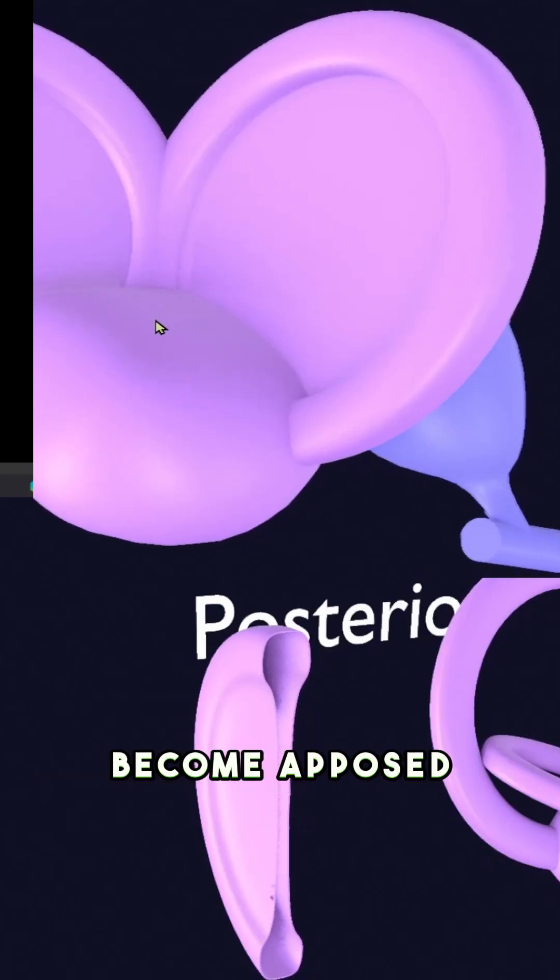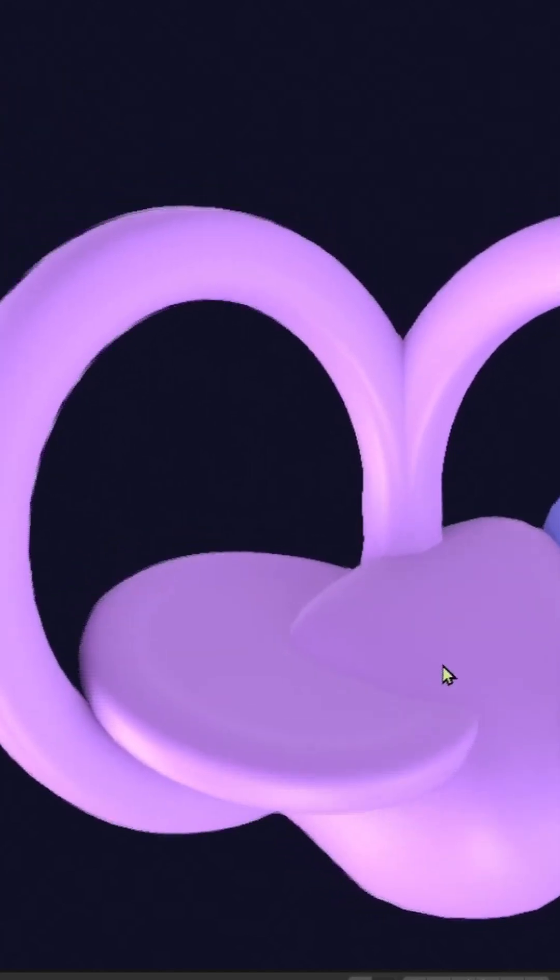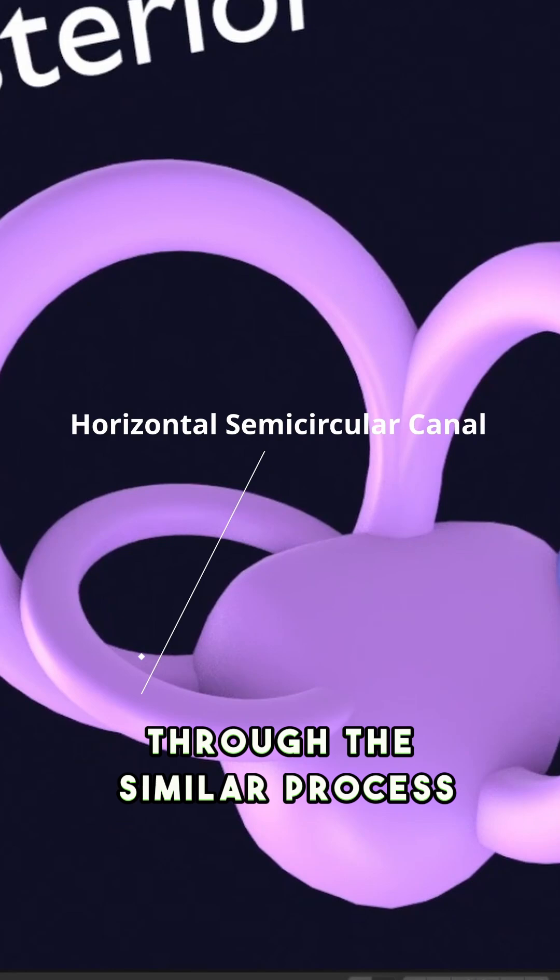From the dorsal swelling, two flat discs arise. Their central portions become opposed and are ultimately destroyed to form two semicircular canals. Later, the horizontal semicircular canal also forms through a similar process.